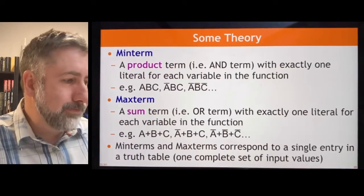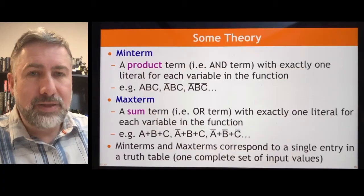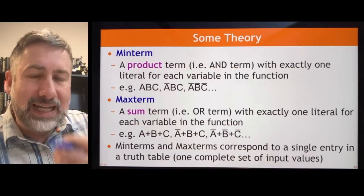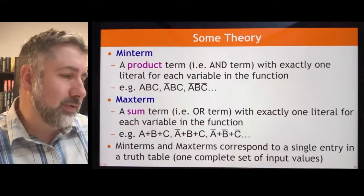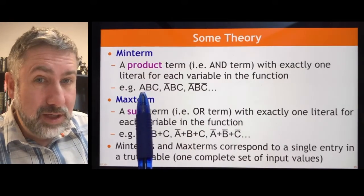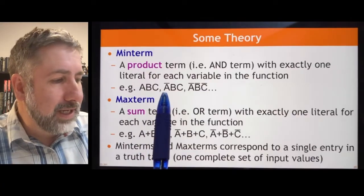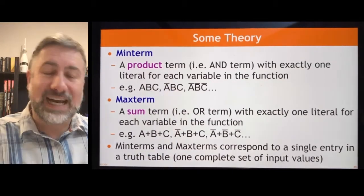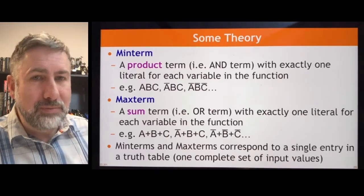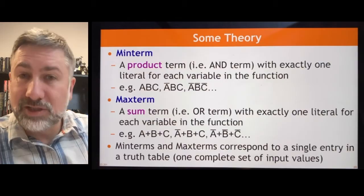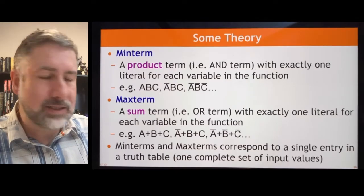A min term is a product term with exactly one literal for every variable in the function. So if a function has three variables — a, b, and c — then a min term is a term that has exactly one instance of a, b, and c in it. If a function has three variables there will be eight min terms; if four variables, there will be 16 possible min terms, because any combination of the variable appearing as positive or inverted gives exactly the same sort of binary encoding representing all possible inputs to that function. The point of min term / max term theory is to represent all possible inputs in the function itself.